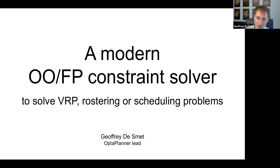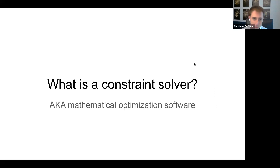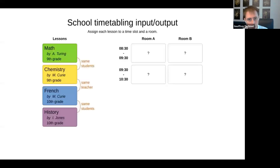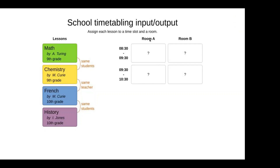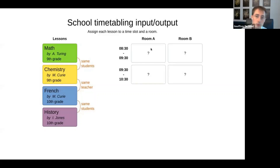Before we get started, let me explain what a constraint solver is — also called mathematical optimization software. Here's a school timetabling use case. There are a number of lessons that need to be taught — math, chemistry, French, and history — and a number of rooms and periods to teach them. So for example, you could teach math in room A at 8:30, or in room B at 9:30, and so forth.